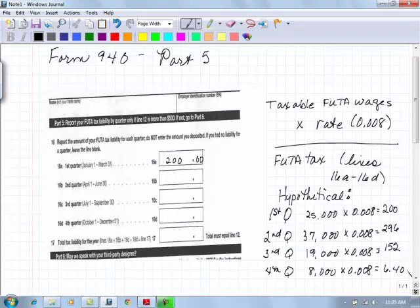In quarter number two, the taxable wages happen to be $37,000. We have looked to see what employees have over $7,000 in earnings for the period cumulative. And as a result, some of them would have wages that are not taxed any further for this year for FUTA. So with that, the total wages are $37,000 that are taxable times that rate, 0.008.